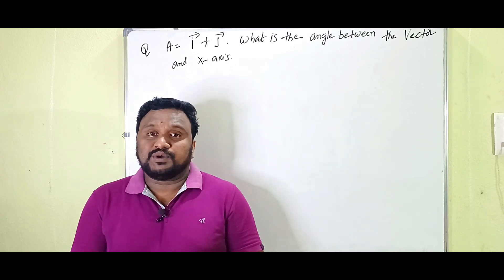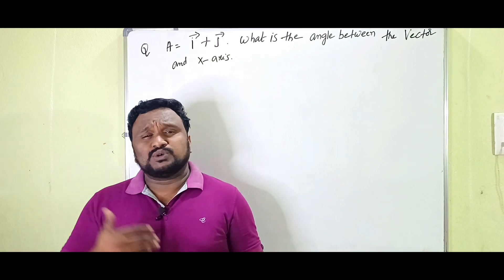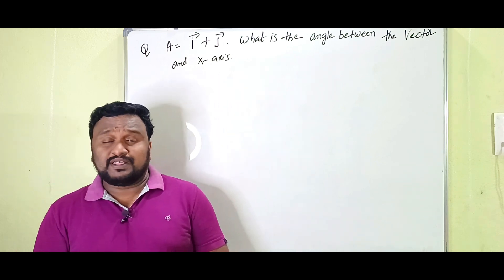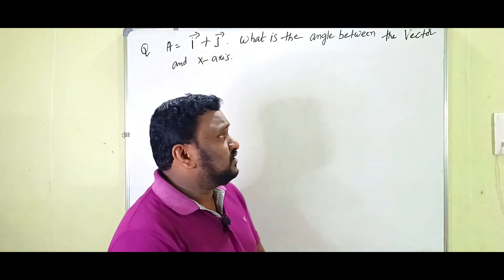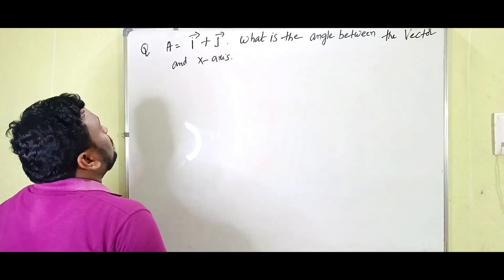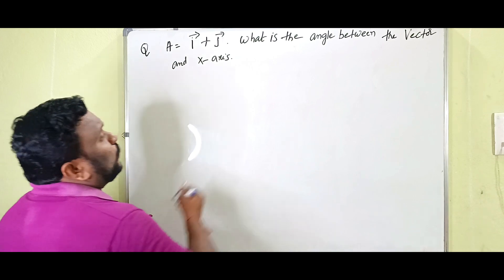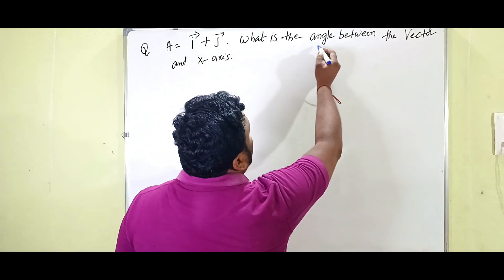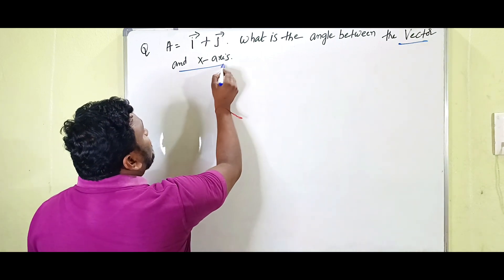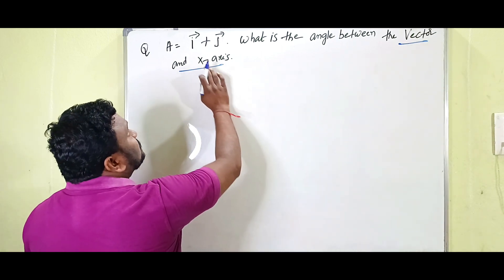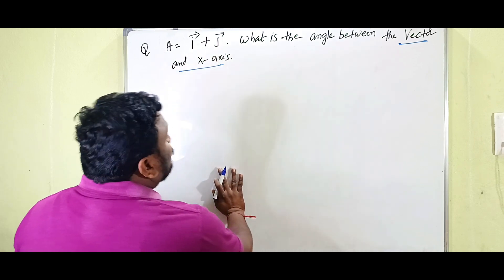In this video we are going to discuss one of the most important very short answer questions in the chapter of motion in a plane. It is a very easy one or two marks question. The question is: vector A is equal to i plus j. What is the angle between the vector and the x-axis?